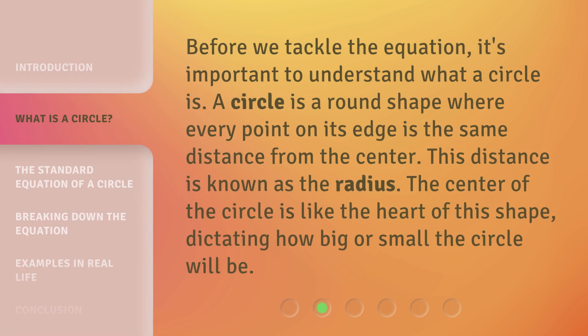Before we tackle the equation, it's important to understand what a circle is. A circle is a round shape where every point on its edge is the same distance from the center. This distance is known as the radius. The center of the circle is like the heart of this shape, dictating how big or small the circle will be.